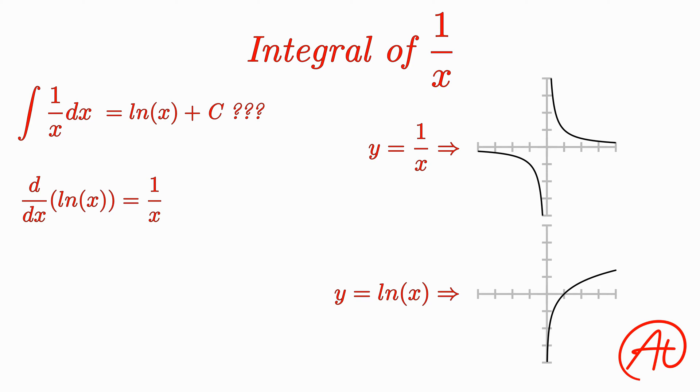For 1 over x, you can plug in any x value except for 0, so it has a domain of x is not equal to 0. But for ln of x, we can't plug in 0, but we also can't plug in any negative x values either. So it has a domain of x is greater than 0. So how can we get this natural log function to have the same domain as the top 1 over x function?